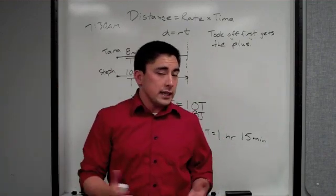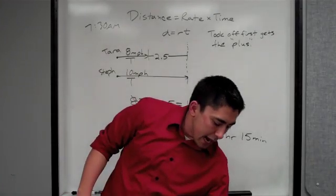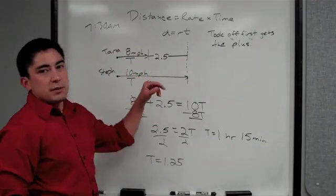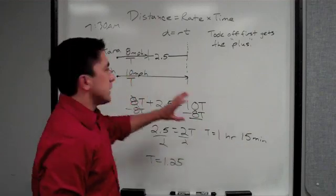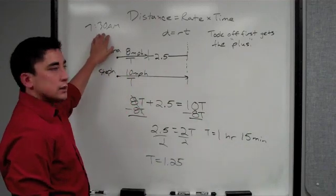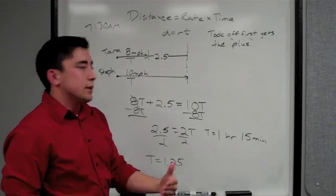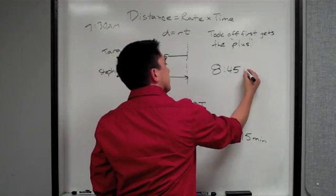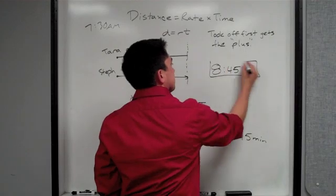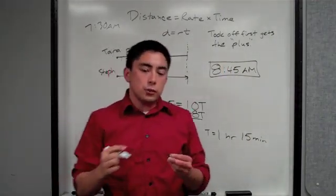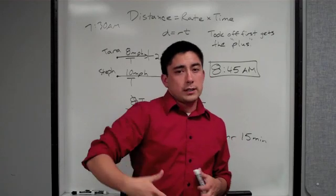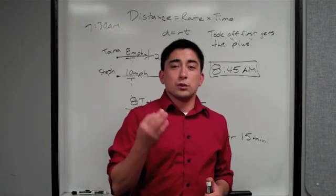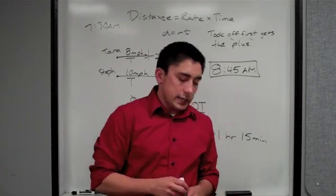But that's not what it asks. It doesn't say how long. It says, at what time will they be 2.5 miles apart? So we're going to add 1 hour and 15 minutes to our time. They take off at 7:30. An hour and 15 minutes later, it's going to be 8:45 AM. Be very careful with how they want your answer. Do they want it in terms of hours and minutes, or do they want an actual time?